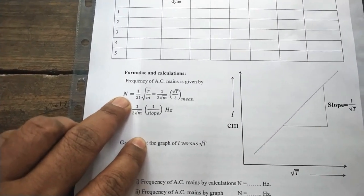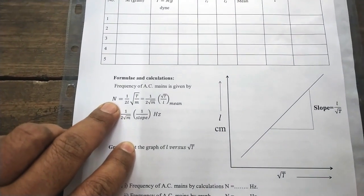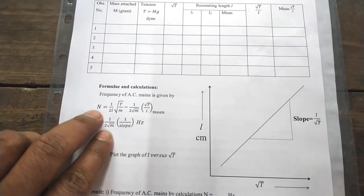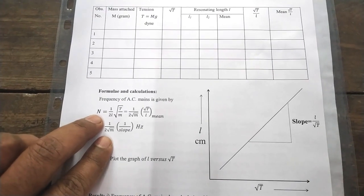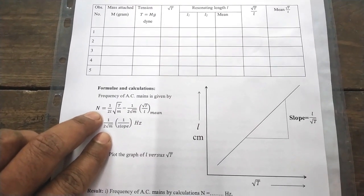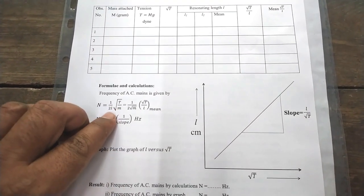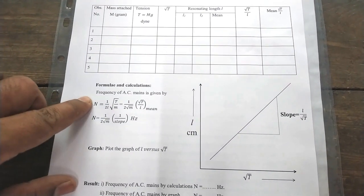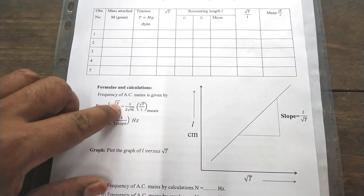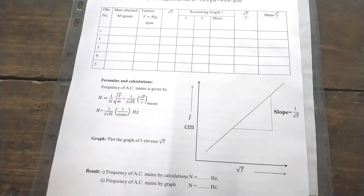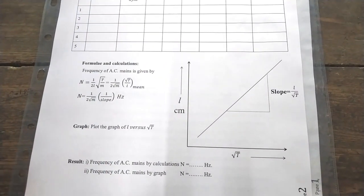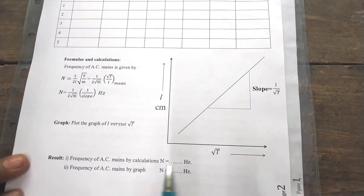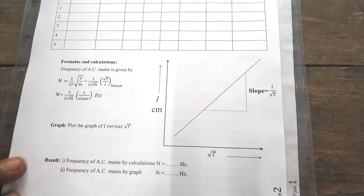The frequency of AC mains has the formula: n = (1/2L) × √(T/m), where n is the frequency of AC mains and T is the tension applied to the string. Since the frequency of AC is constant, the tension in the string and the length of the wire are directly proportional. So if we increase tension, the vibrating length increases. We calculate this vibrating length and plot a graph to find frequency.